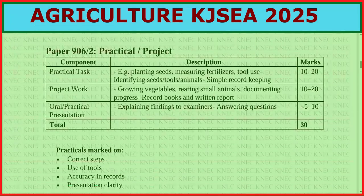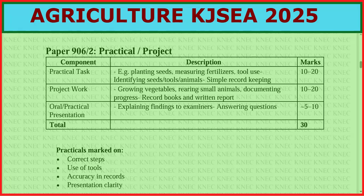The practical part includes: practical tasks such as planting seeds, measuring fertilizers, tool use, identifying seeds, tools, and animals, and simple record keeping — 10 to 20 marks. Project work involves growing vegetables, rearing small animals, documenting progress, record books, and written reports — 10 to 20 marks. Oral practical presentation involves explaining findings to examiners and answering questions — 30 marks.